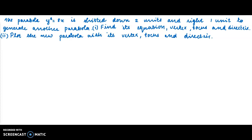Hello students, today we are going to do a problem of shifting — horizontal and vertical shifting of the vertex of a parabola. The parabola y² = 8x is shifted down 2 units and right 1 unit to generate another parabola.